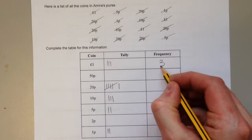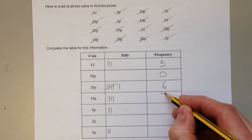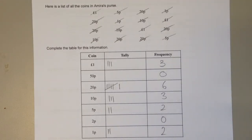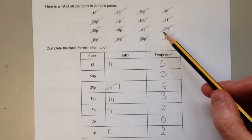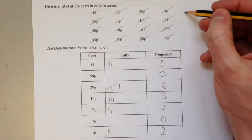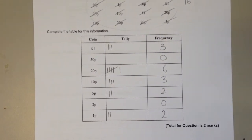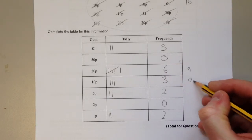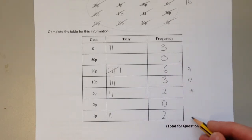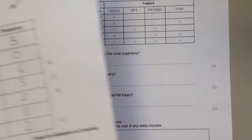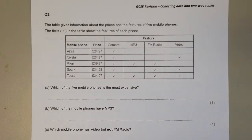Frequency means total, so we have: three one-pounds, zero 50 pences, six, three, two, zero, two. Make some final checks — check that you've crossed off all the numbers and haven't missed anything. Count up how many values you've got: you get 16. Add up your frequencies and check they also make 16: three and six is nine, plus three is twelve, plus two is fourteen, plus two is sixteen.